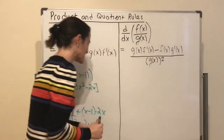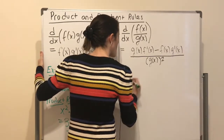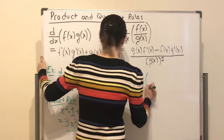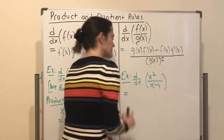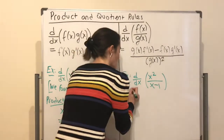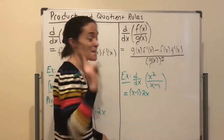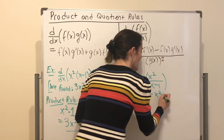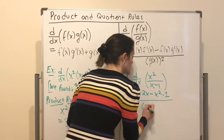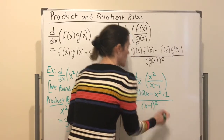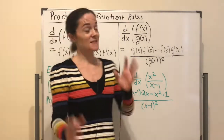Let's do the example I was unable to do yesterday: x squared over (x minus 1). Applying the quotient rule: denominator times derivative of the numerator, minus numerator times derivative of the denominator, all over denominator squared.